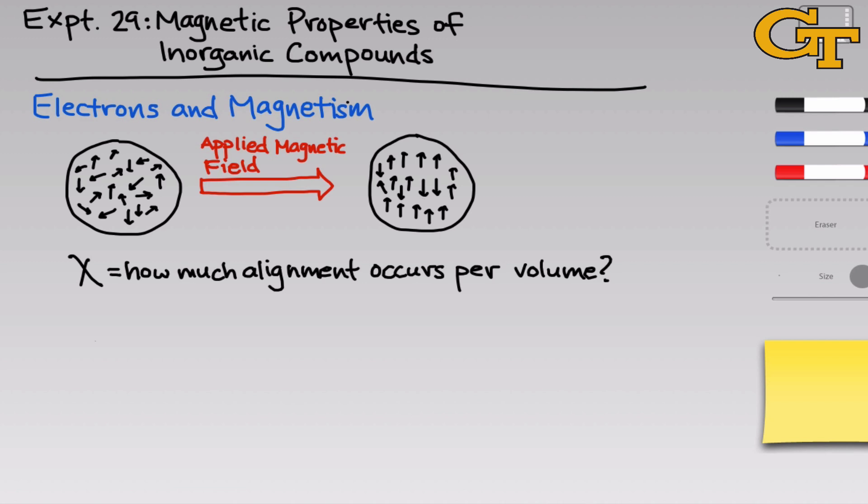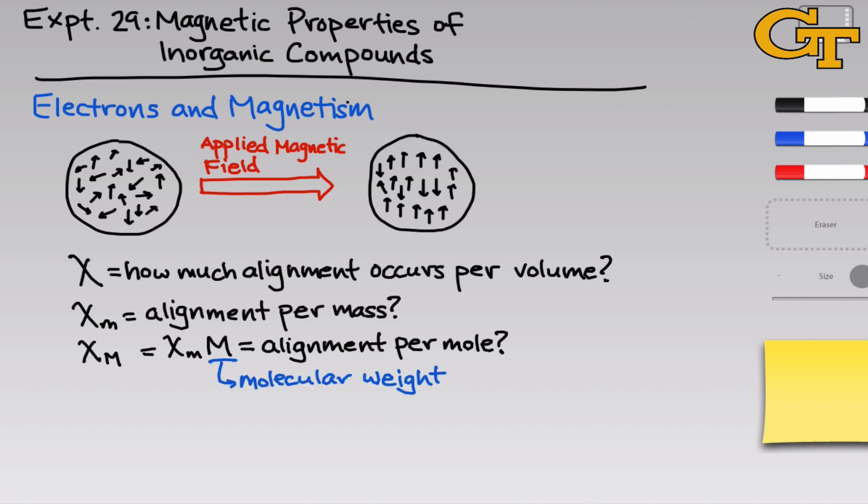This is a per volume measure. But we can also think about the alignment per unit mass of the material. The alignment per mass is just the alignment per volume divided by the density. Chi capital M is the alignment per mole. We're interested in this as well. This is a quantity that is intensive in the sense that it doesn't depend on the amount of substance.